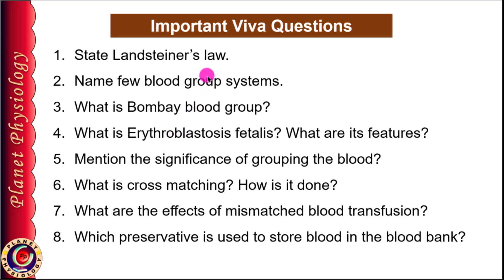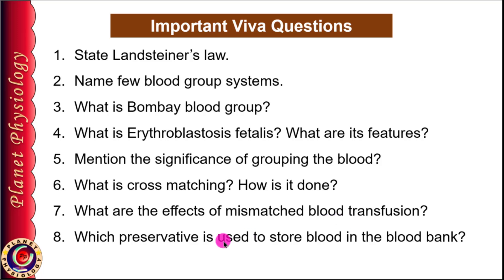Here are some important viva questions on this topic. With respect to blood group, everyone must know about Landsteiner's law, other blood group systems, Bombay blood group, Erythroblastosis fetalis and its features, significance of blood grouping, cross matching and how it is done and its significance, effects of mismatched blood transfusion, and preservatives used to store blood in blood banks.